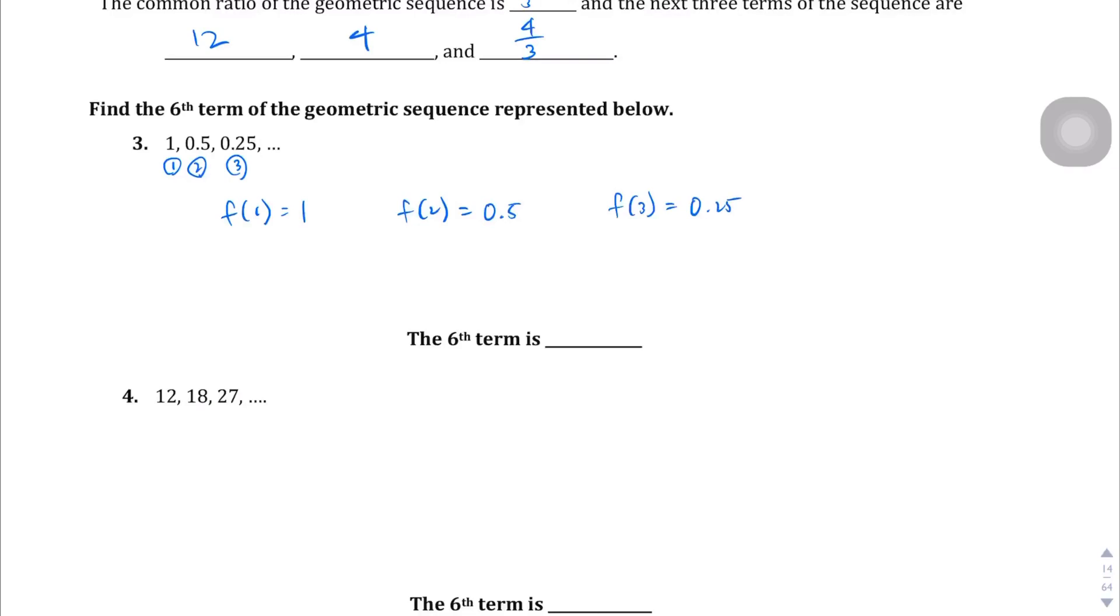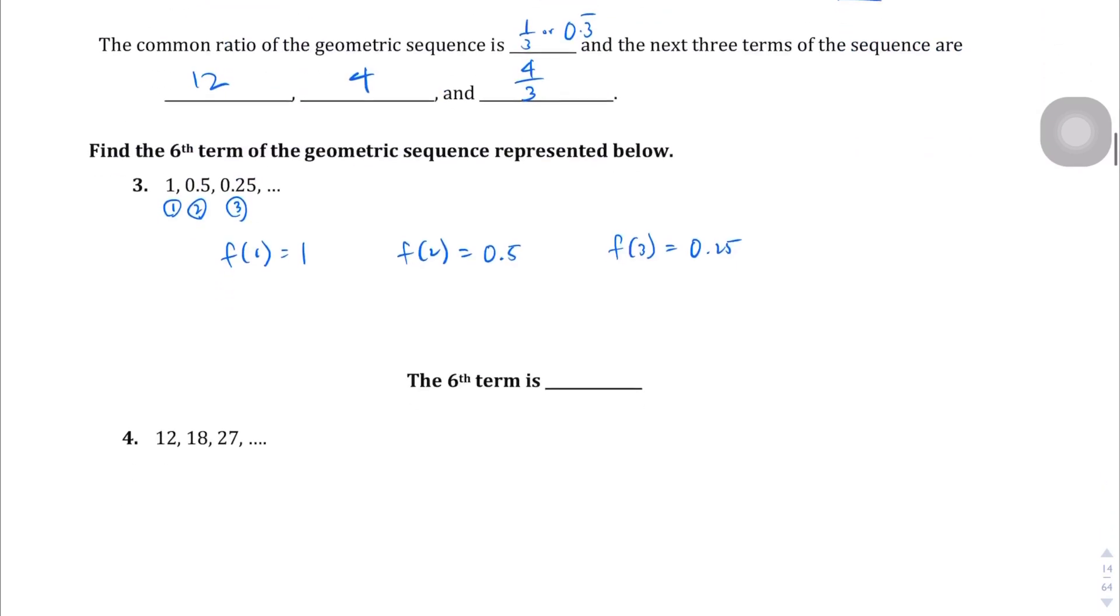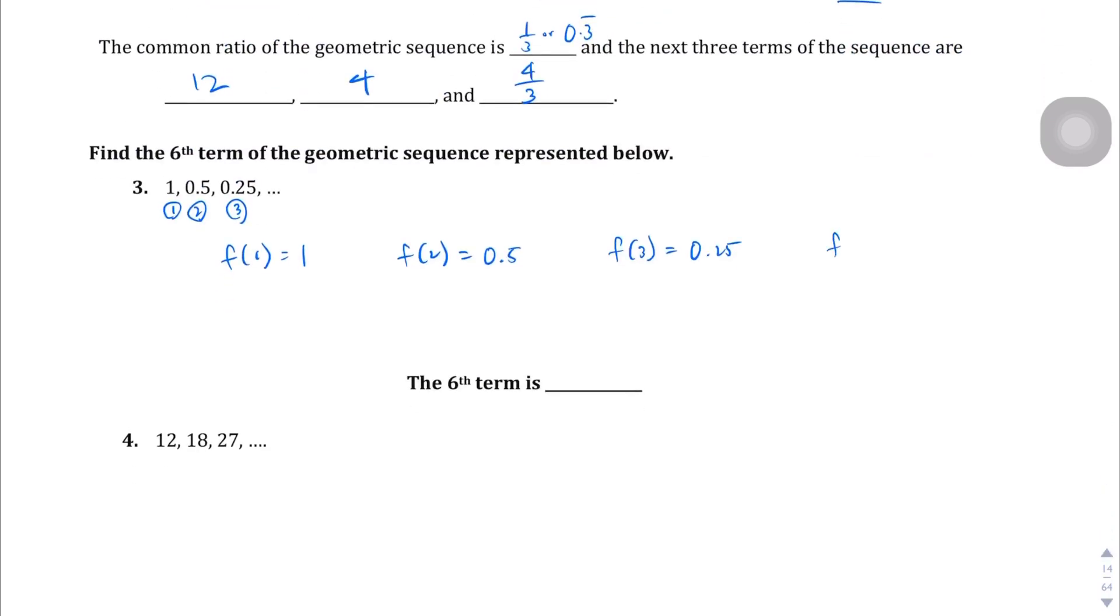And so what we're going to do is take the, in order to find the fourth term, we don't know what the fourth term is yet. So in order to find the fourth term, what we're going to do is we're going to take the term before it, which is f of 3 times the common ratio, which we haven't done yet. Let's find r. r equals, let's use the first two terms, so it's going to be the second term, which is 0.5 divided by 1, which gives us 0.5 or 1/2. So the ratio is 1/2.